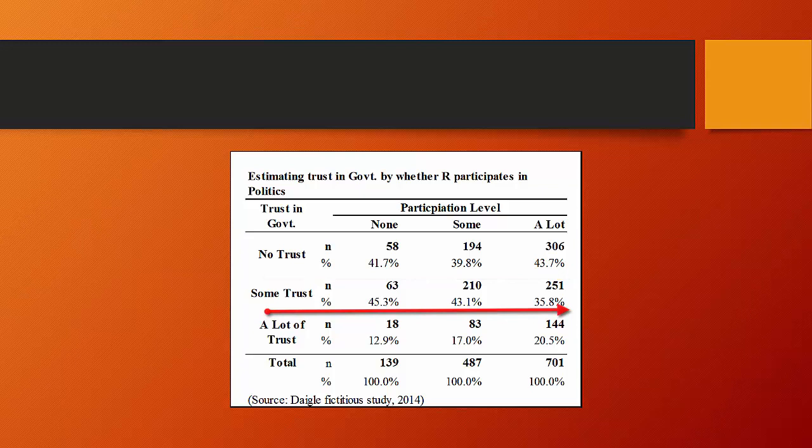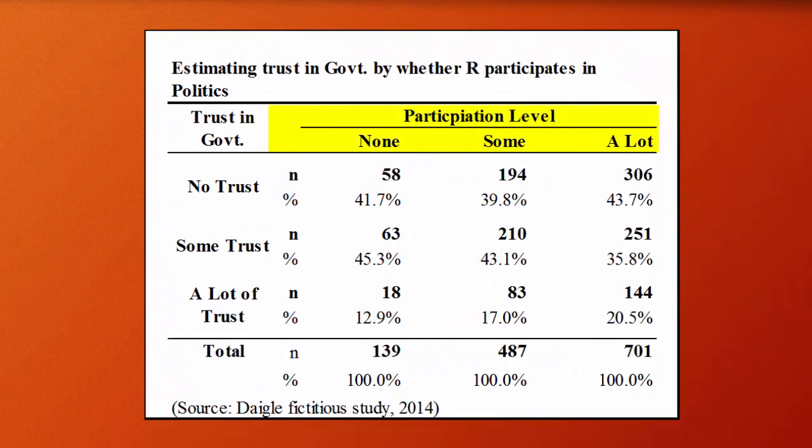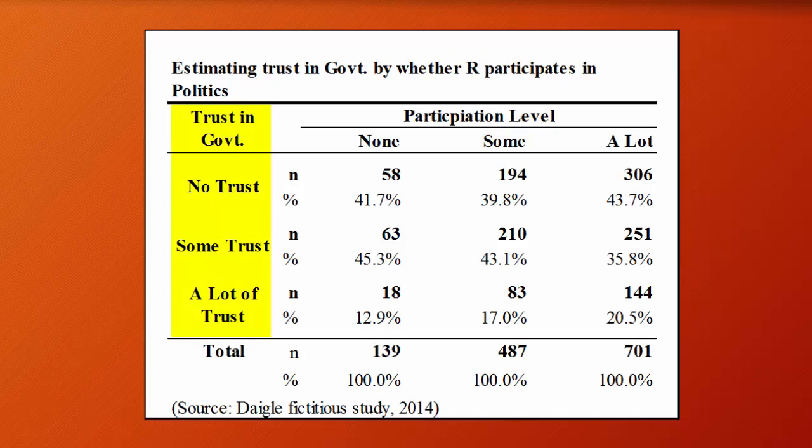So for example, in this table here, we have the three categories of participation level: none, some, and a lot. And we're using that participation level to explain why people might have more or less trust in government.